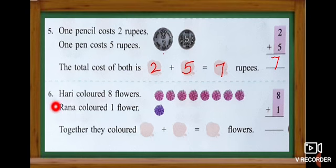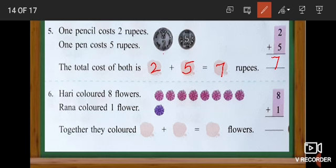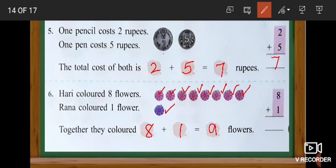Look at the sixth one. Hari colored eight flowers and Rana colored one flower. Now we are going to find out how many flowers they colored together. Hari colored eight flowers and Rana colored one flower. Count: one, two, three, four, five, six, seven, eight — plus one — nine. Eight plus one equals nine flowers.